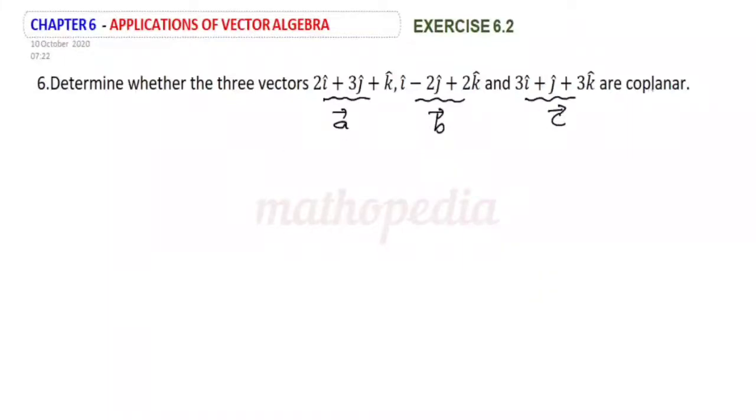To check whether it is coplanar or not, we have to find the box product of ABC. If box product ABC is 0, we can say it is coplanar.